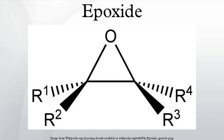Most epoxides are generated by treating alkenes with peroxide-containing reagents, which donate a single oxygen atom. Typical peroxide reagents include hydrogen peroxide, peroxycarboxylic acids, and alkyl hydroperoxides. In specialized applications, other peroxide-containing reagents are employed, such as dimethyldioxirane. The largest-scale application of this approach is the production of propylene oxide from propylene using either t-butyl hydroperoxide or ethylbenzene hydroperoxide.